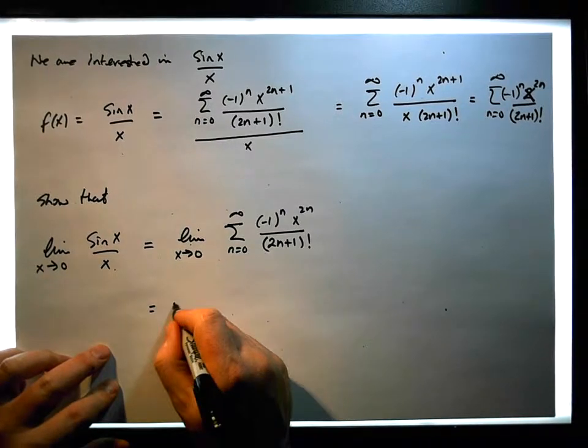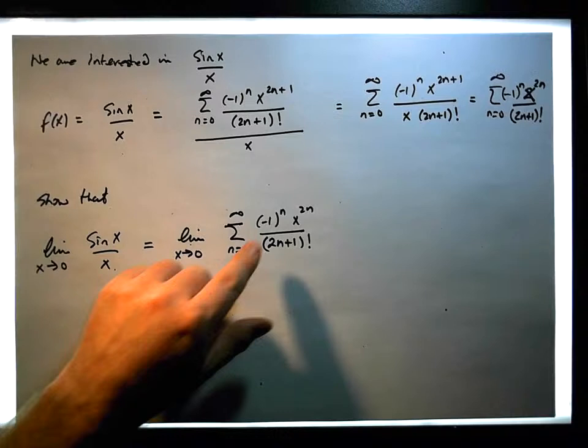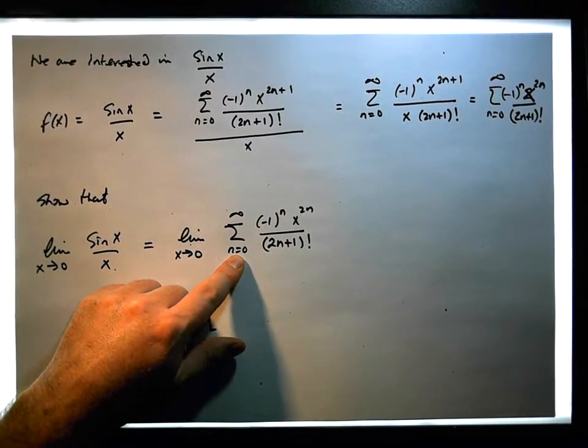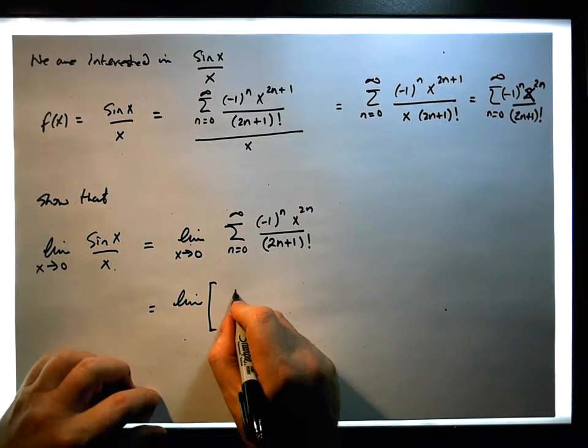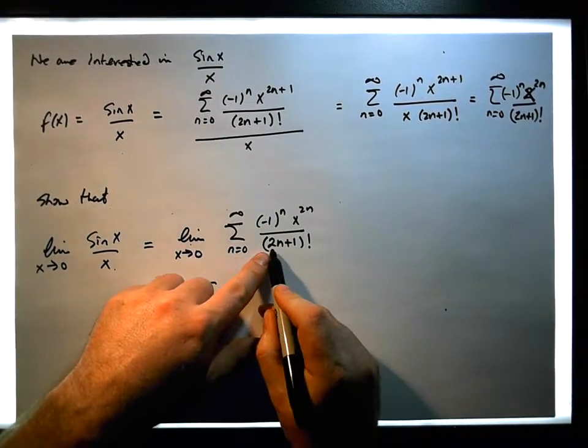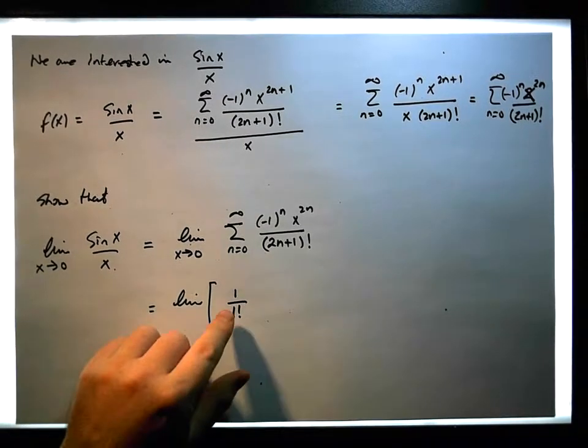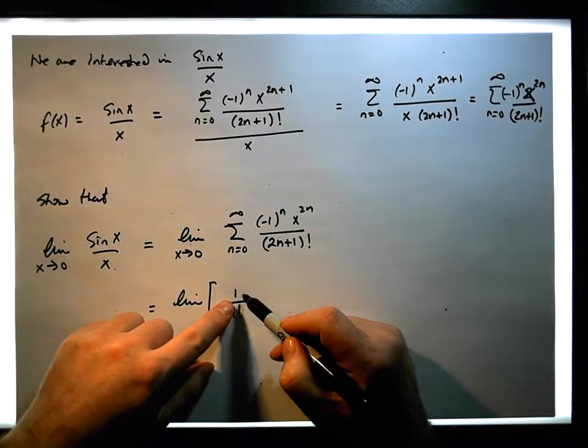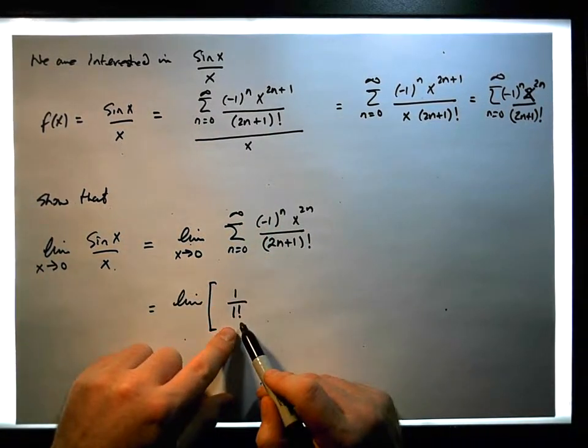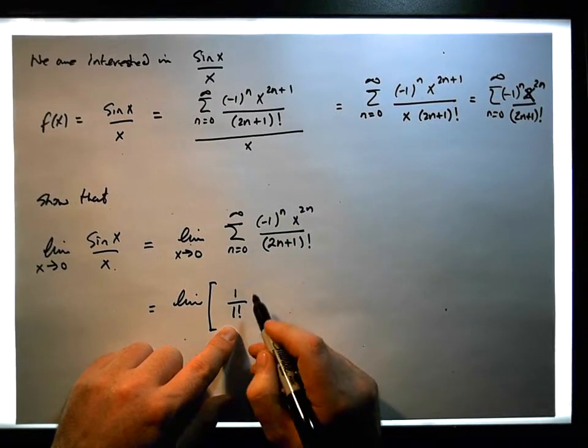So it's effectively that limit that we have to calculate. And we know what this is. This is the same as the limit of, when we expand this out, starting at when n is 0. Minus 1 to the 0 gives us 1. So this is going to be 1 over, when n is 0, 2 times 0 gives us 0, plus 1 gives us 1 factorial. And x to the 2 times 0 is the same as 1.